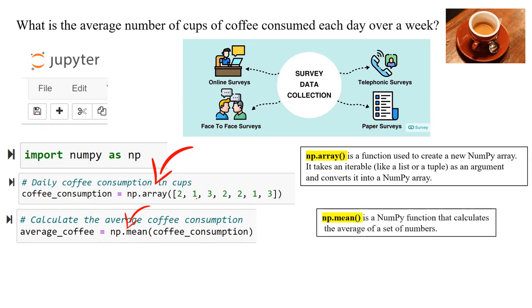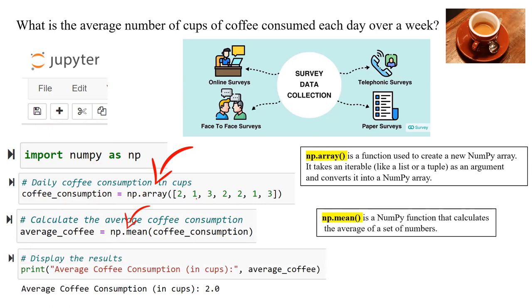np.mean is a NumPy function that calculates the average of a set of numbers. Then you're going to display the result by typing print, open parenthesis, 'average coffee consumption in cups', in double quotes, comma, average_coffee, which is the variable that you defined previously.